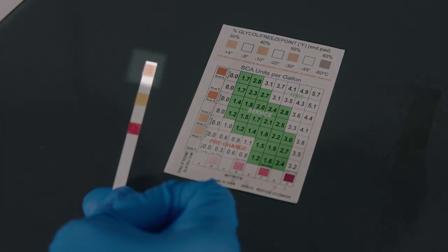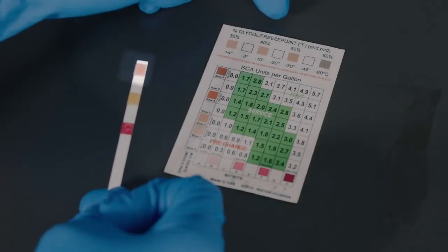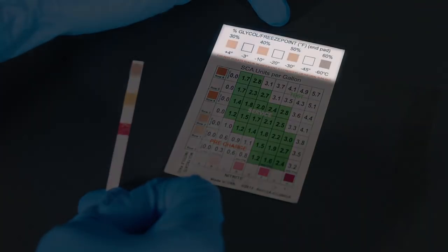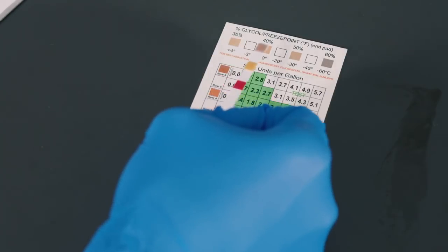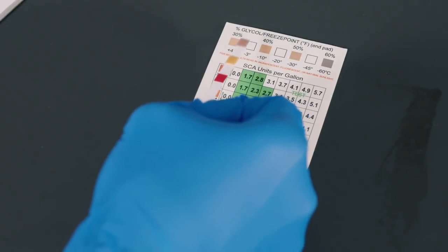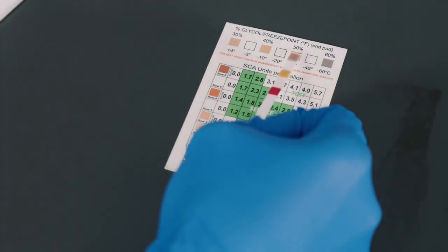To check the percent glycol hold the chemical pad that is furthest from your hand against the percent glycol and freeze point scale that is included with the strips. You'll need to find the color on the chart that best matches the test strip. For this example the percent glycol is approximately 50 percent glycol and provides freeze protection down to negative 30 degrees Celsius.